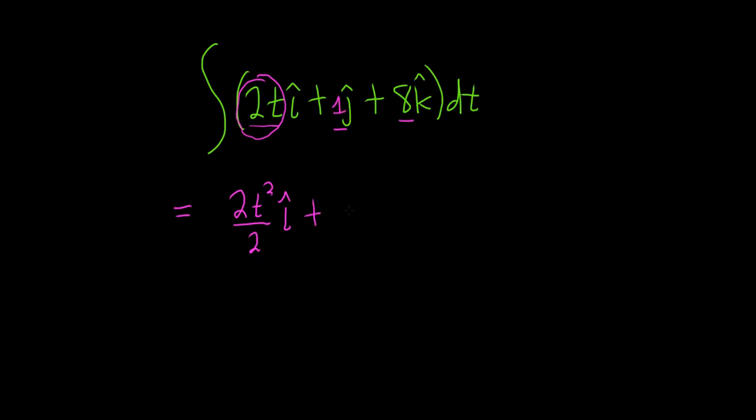There's actually a 1 here in front of the j hat. So this integrates to t times j hat. Plus, when you integrate 8, you simply get 8t, and then we have the k hat.